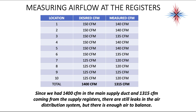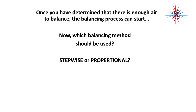After repair, we end up with 1,400 CFM in the main supply duct — measured coming out of the blower or air handler — and 1,315 CFM coming from the supply registers. There are still leaks in the air distribution system, but we're within 10%, so there's enough air to balance. Ideally I'd want that number to be closer, but we can proceed.